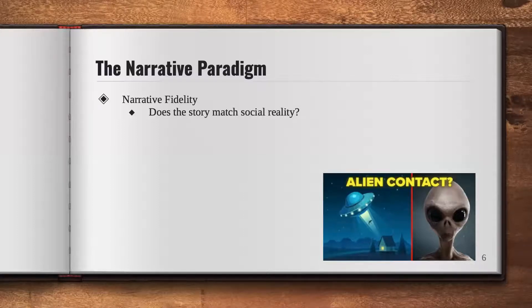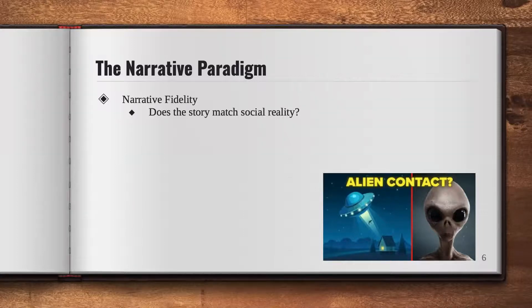The second part of the narrative paradigm: narrative probability is about coherence; narrative fidelity refers to whether the story or argument makes sense with reality — with what we know as reality. With the story about my classmate at Coachella, would that be something that could happen to an average person at that place? Probably not. Usually photographers or paparazzi are following a celebrity. It wouldn't happen for an average person just chilling there not doing anything out of the ordinary. That story does not match reality.